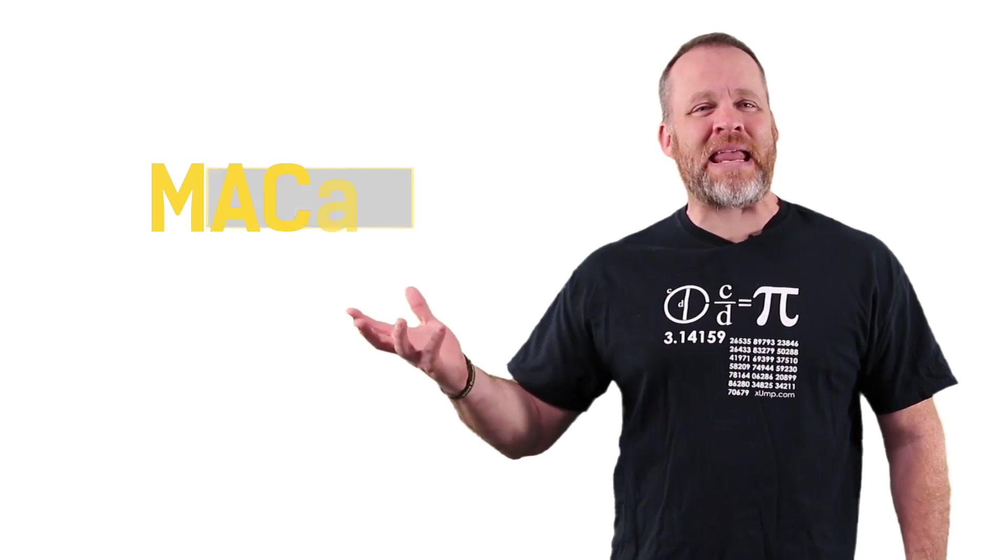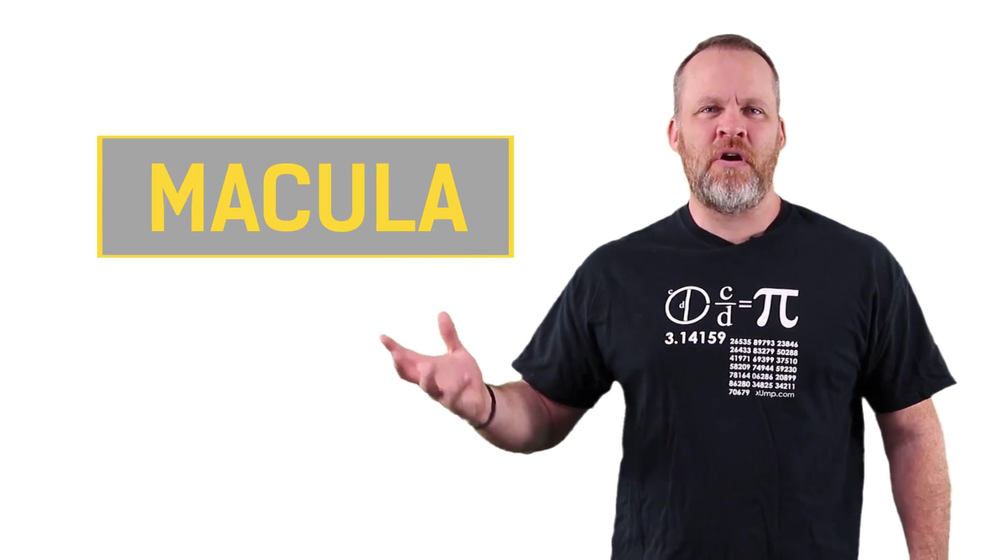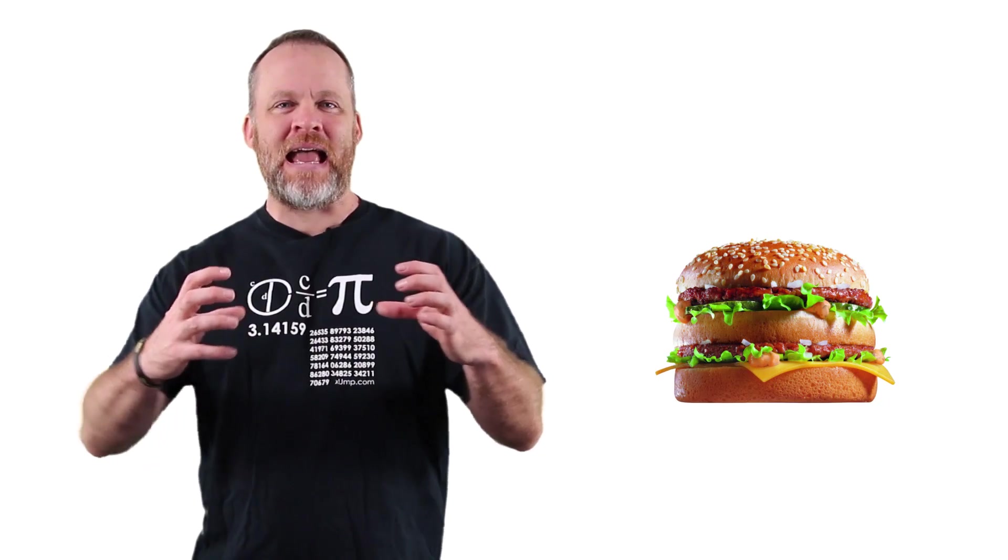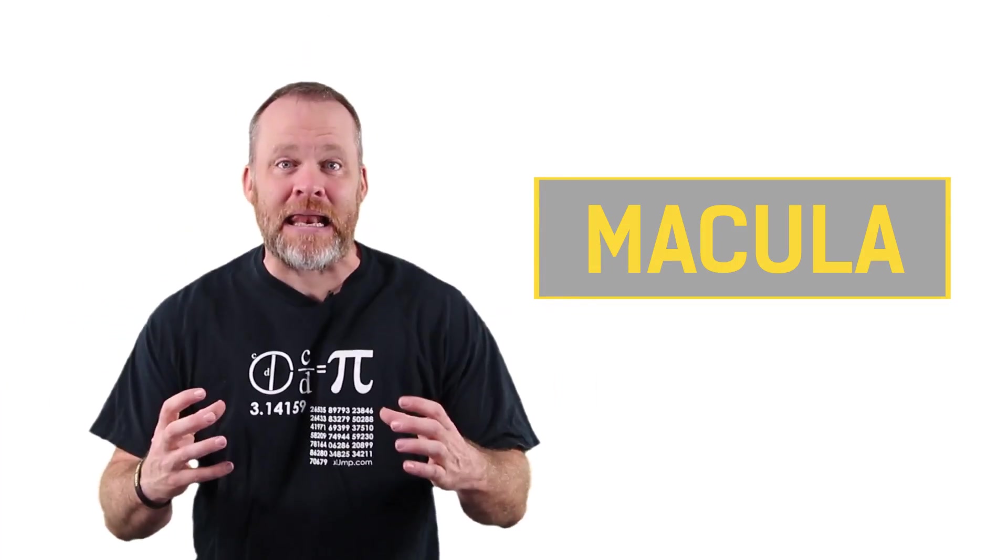So we have the word macula. We need to turn that into a picture. For me, I think of a Big Mac, a hamburger, a Big Mac, and it's eaten by Dracula. So you have a Big Mac eaten by Dracula. It's a macula.